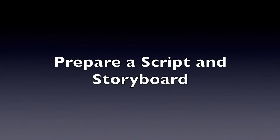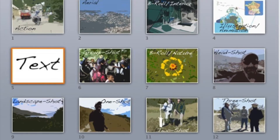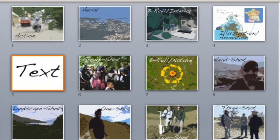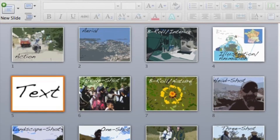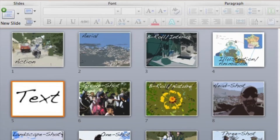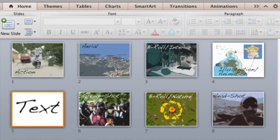The next step is to create a script and storyboard to help you explain your material with a minimum of technical jargon and in the most concise way possible. A script or even a brief outline can help you stay on track and avoid digressions. A storyboard, which can be created in PowerPoint, is a visual sequence of steps that summarizes what media to use for each video segment, where to film, and what perspectives to use.